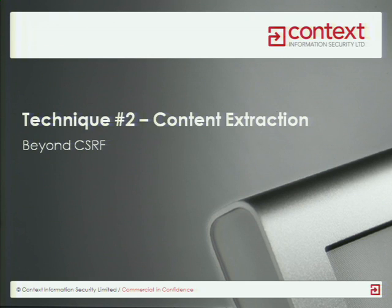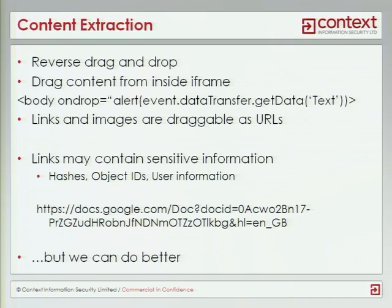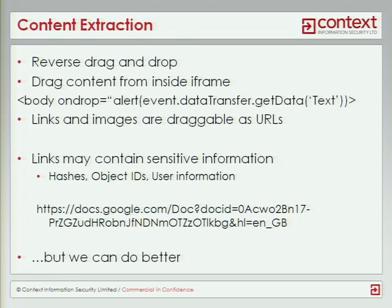But we can actually do even better than that — we can get data out of an iframe. We reverse the drag and drop technique: instead of dragging data into an iframe from the attacker site, we get the user to drag content out of an iframe and onto the attacker site. With the drag and drop API, we can use the onDrop event to get any data that's dropped onto the page. What kind of stuff could we drag out of a page? Links and images are draggable by default, and when dropped onto the page they get converted into the relevant data.